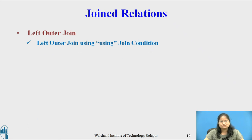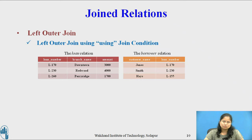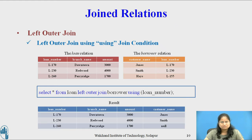Consider left outer join using the USING join condition. The USING clause is a form of natural join that only requires values to match on the specified attributes. For relations loan and borrower, the query is: SELECT * FROM loan LEFT OUTER JOIN borrower USING (loan_number). The result of this query is shown on this slide. Here, the common attribute loan number appears only once.